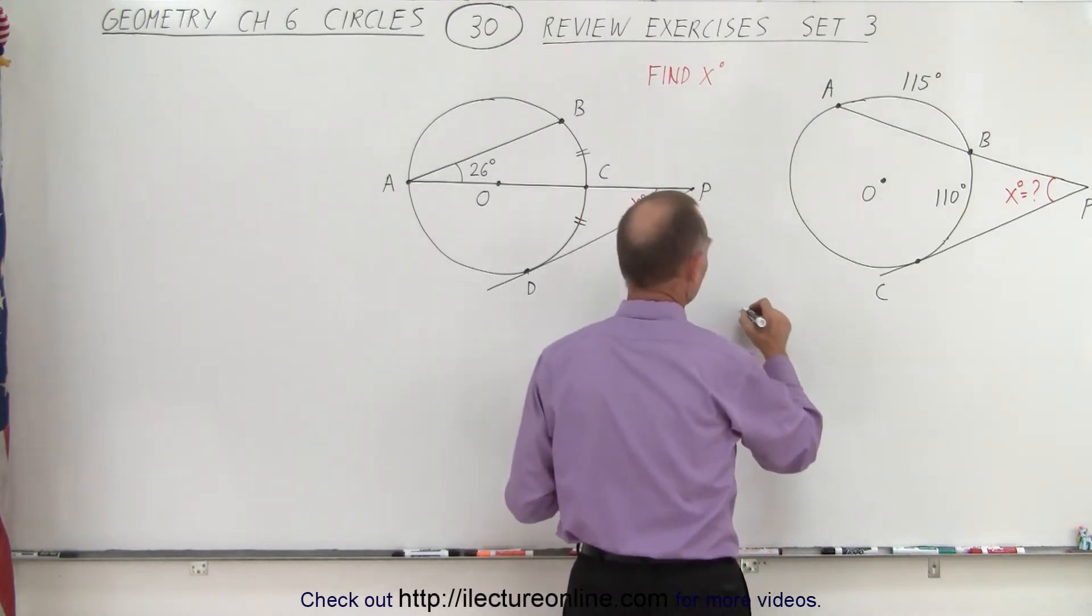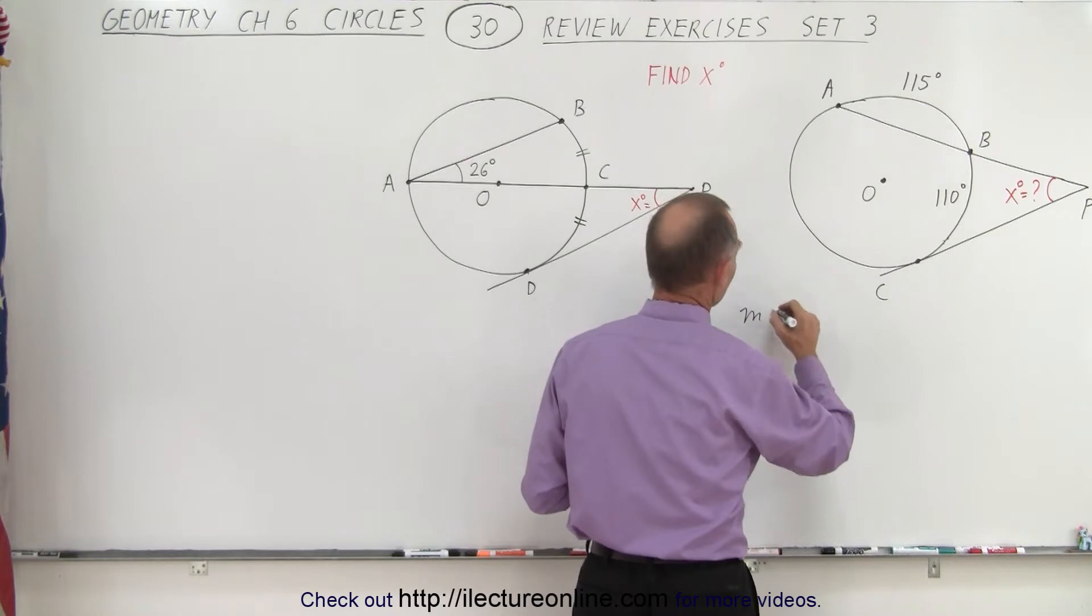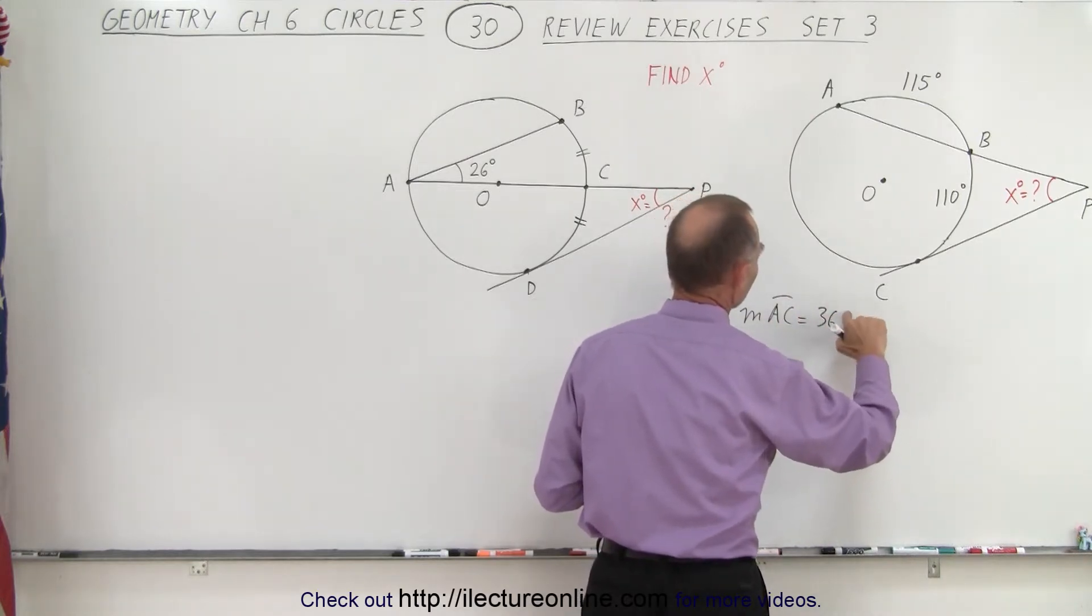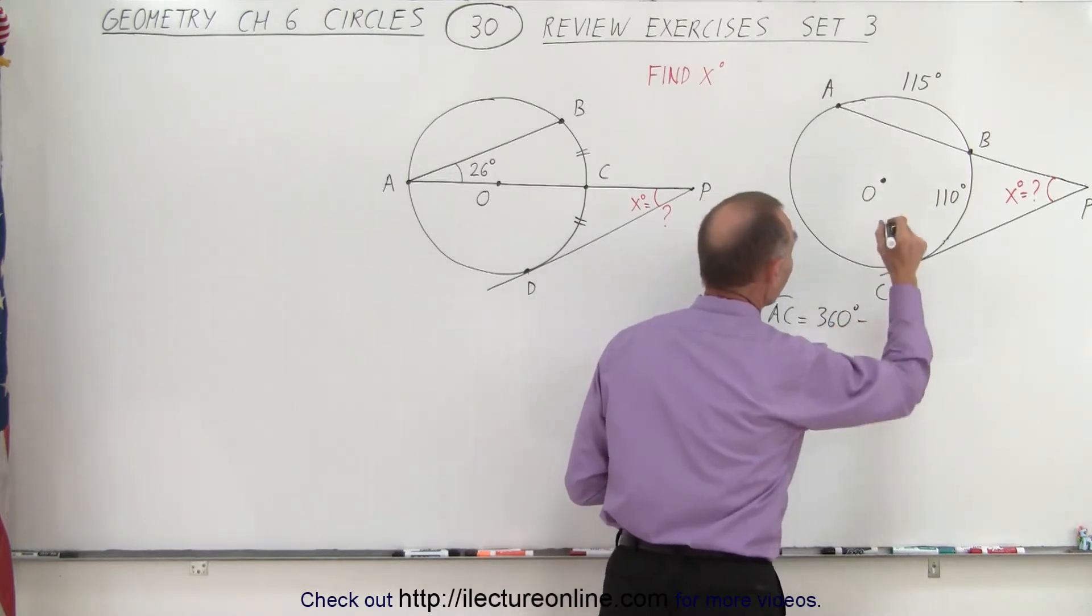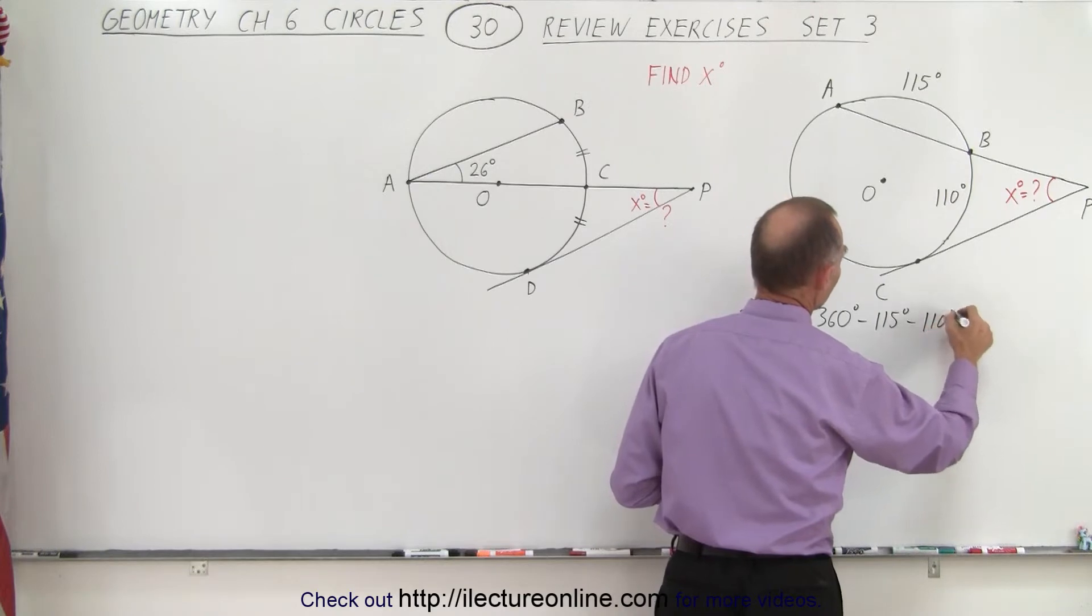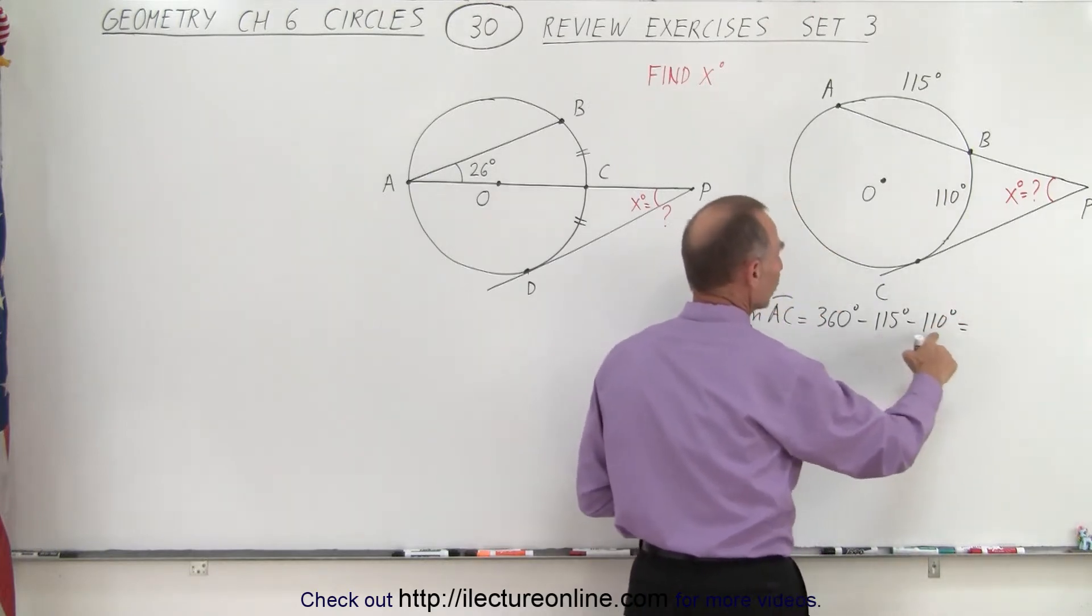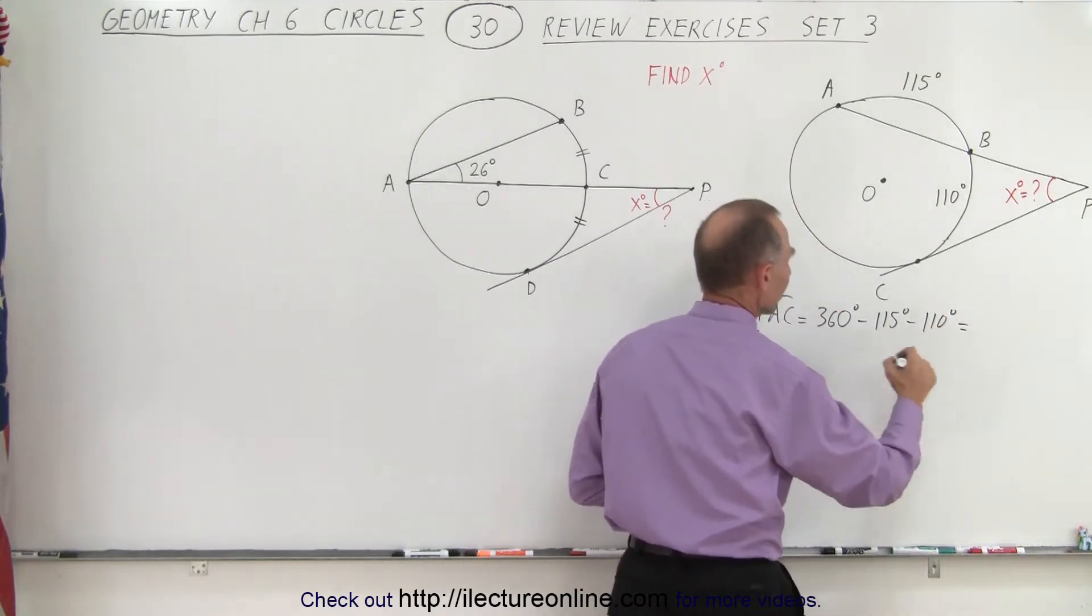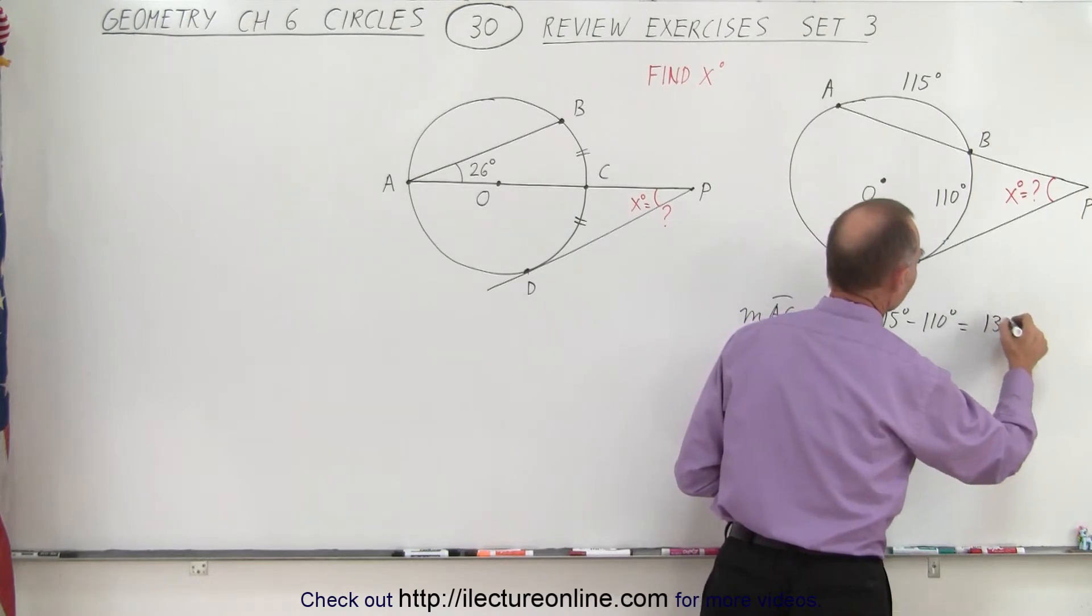So we can say that the measure from the arc length from A to C must equal 360 degrees minus 115 degrees and minus 110 degrees. So that's equal to minus 225, that means that's equal to 135 degrees.